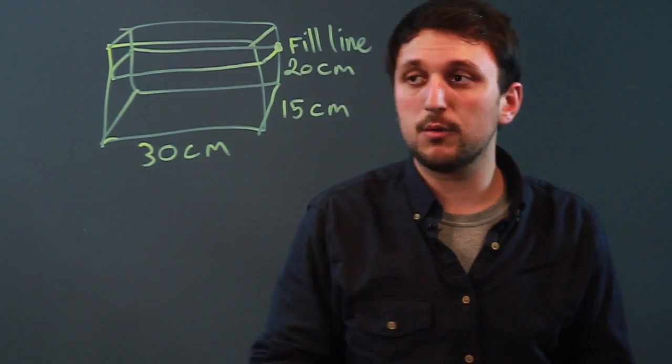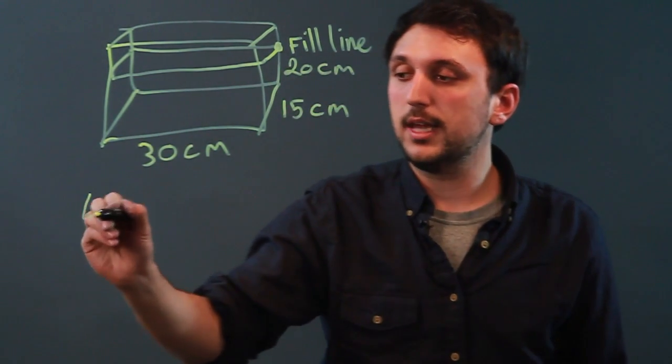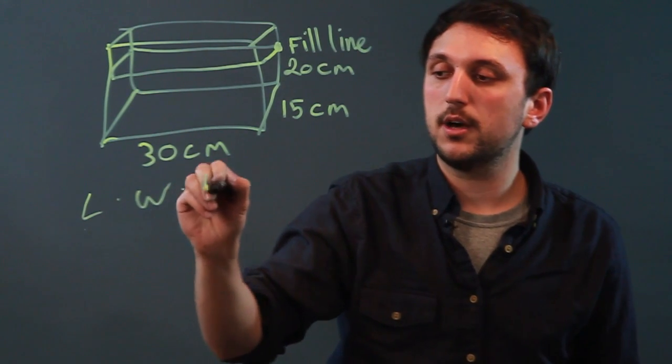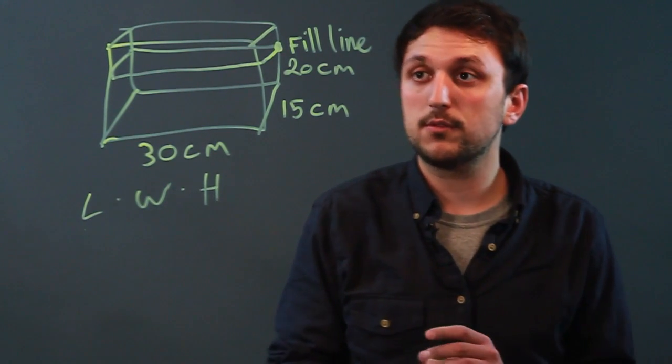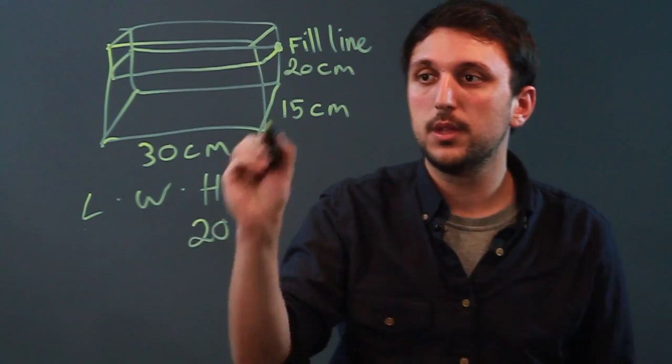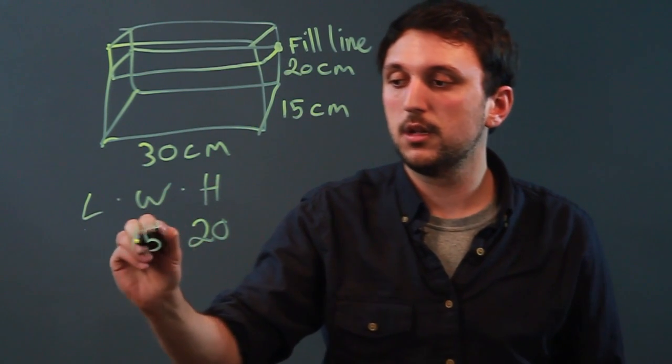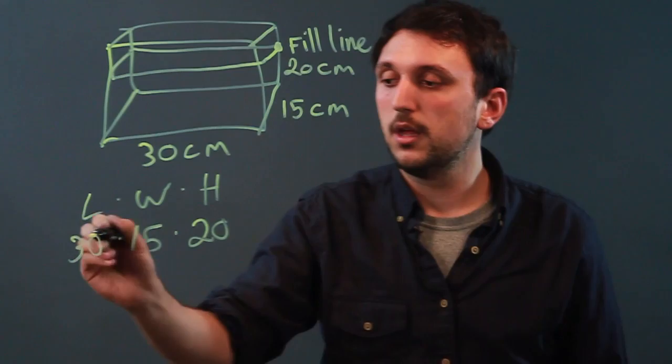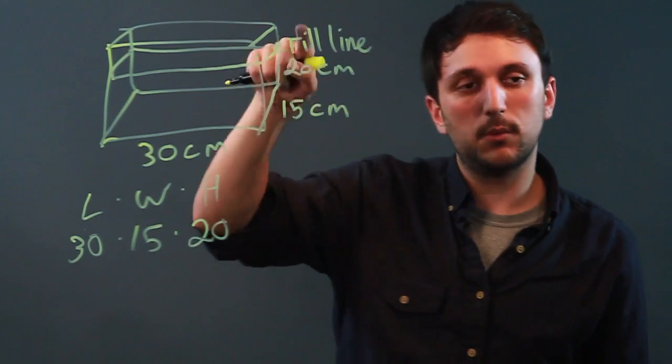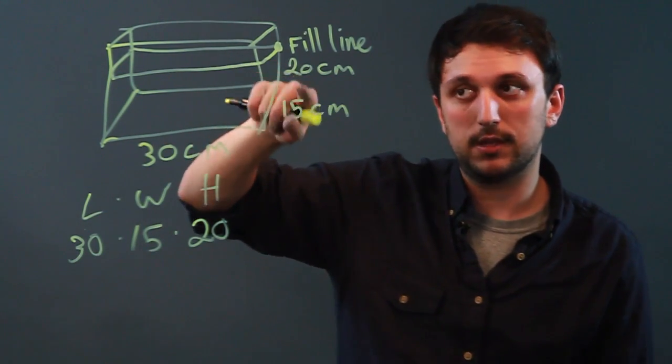Now the volume of any rectangular solid is length times width times height. So in this case, up to the fill line is going to be 20 times 15 times 30. Now I know I went backwards there because the most important measurement is the fill line. So that's 20 centimeters.